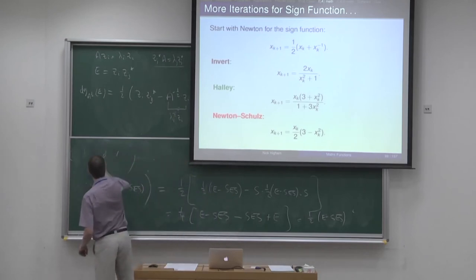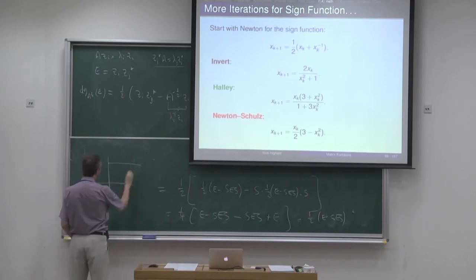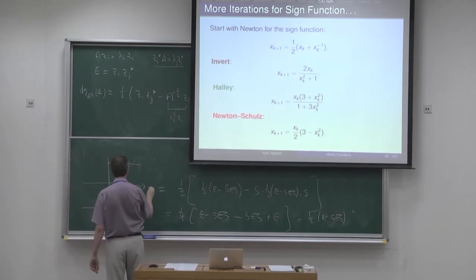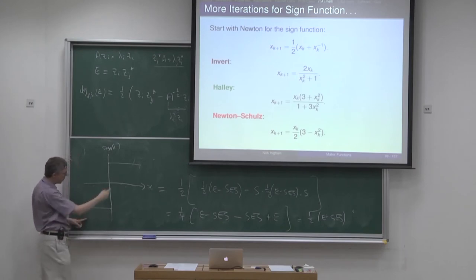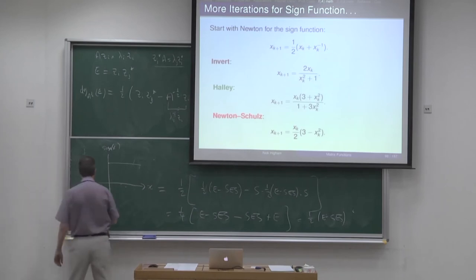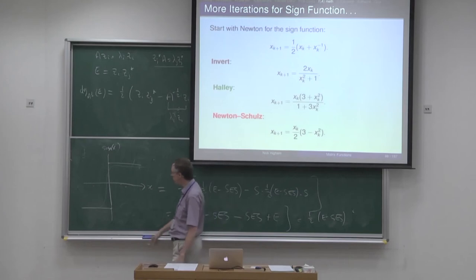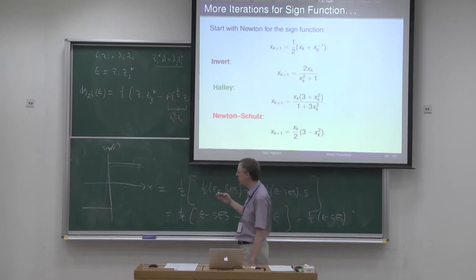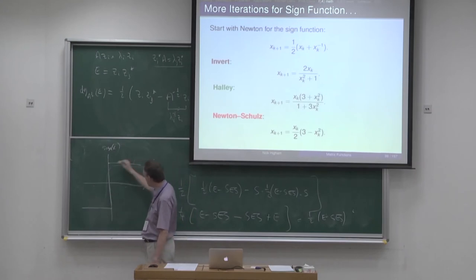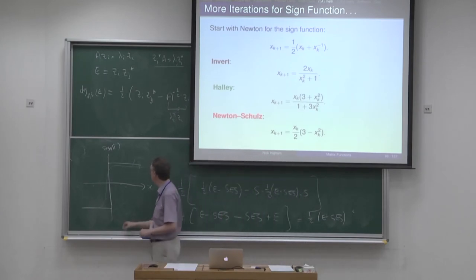A quick diagram: if you plot the sign function, it's basically plus 1 in the right half plane and minus 1 in the left half plane. Rational approximations to this will try to reproduce that behavior, but being smooth functions they'll have some curvature. The question is: what's the best rational approximation to this step function? That's what the Zolotarev analysis answers. If you want, say, a degree-3 over degree-3 rational — what's the best approximation in the L-infinity norm to the sign function? There's beautiful approximation theory with equi-oscillation properties behind all that.